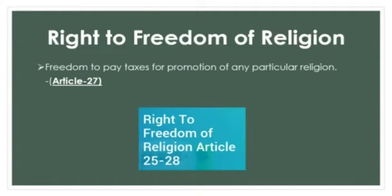Article 27 addresses freedom regarding taxes for promotion of any particular religion. According to Article 27 of the Constitution, there can be no taxes the proceeds of which are directly used for the promotion or maintenance of any particular religion or religious denomination.